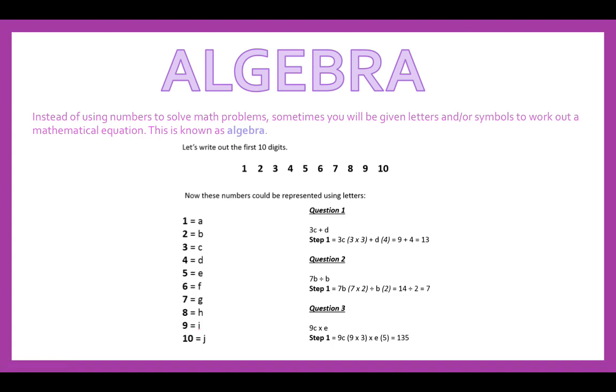Instead of using numbers, we've used letters to show a different way of solving math equations. Let's have a look at another example: 7B divided by B. The B is representing 2. So 7 times 2 divided by B again, which is 2. We've got 7 times 2 is 14 divided by B, which is 2, gives you 7.